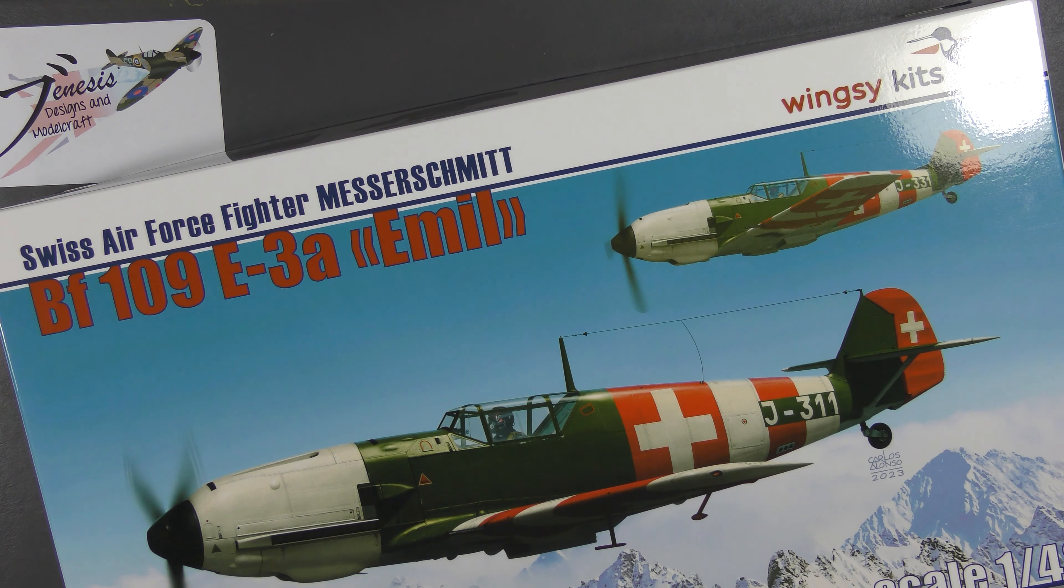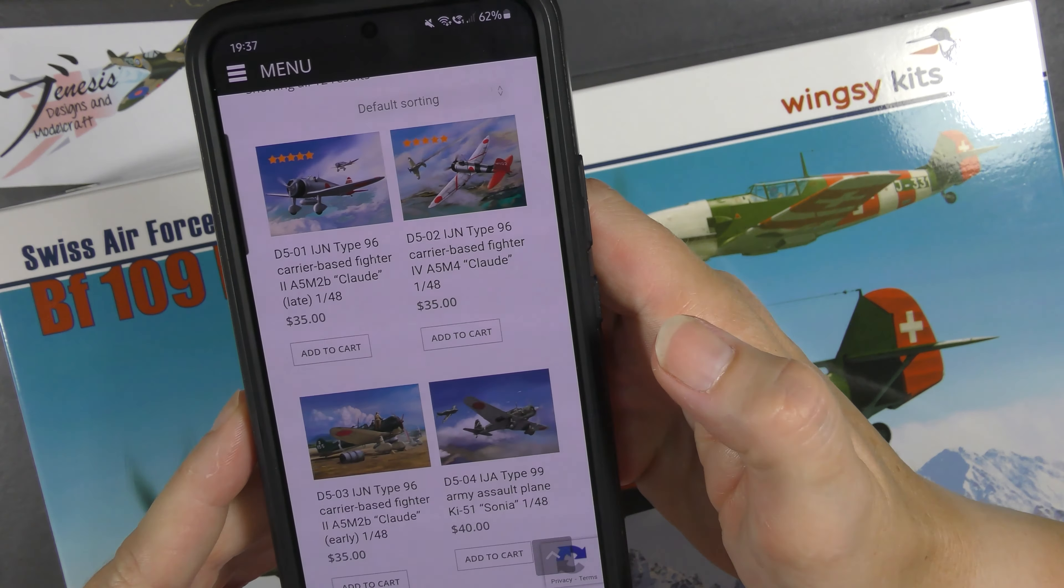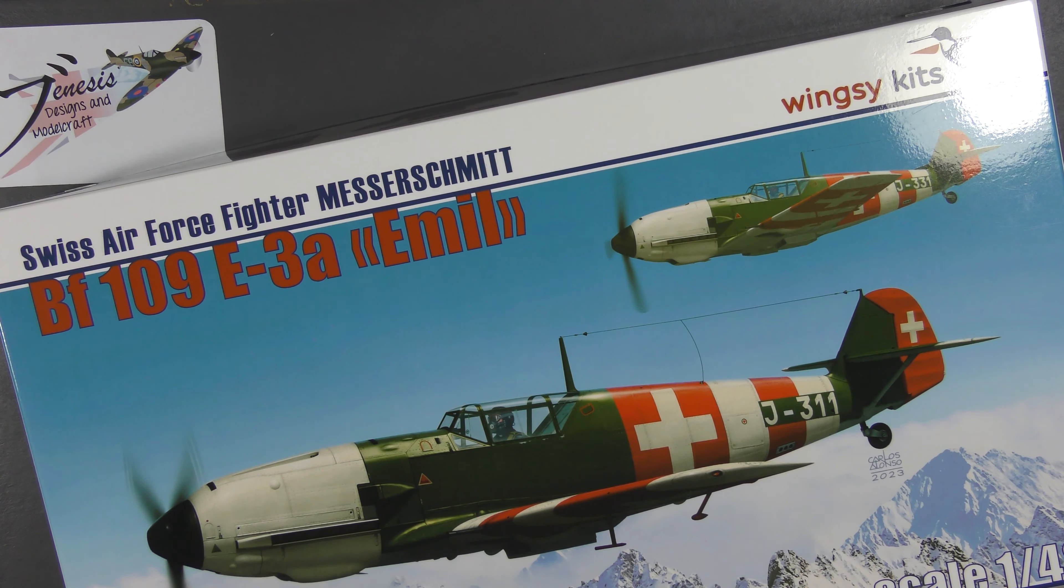At the moment the range consists of a Claude, a Sonya, and the 109s in various different boxings and types. Here's the Wingsy website - you've got the Imperial Japanese Navy Type 96, the Imperial Japanese Army Type 99, three boxings of each, and six boxings of the 109E in various different variants.